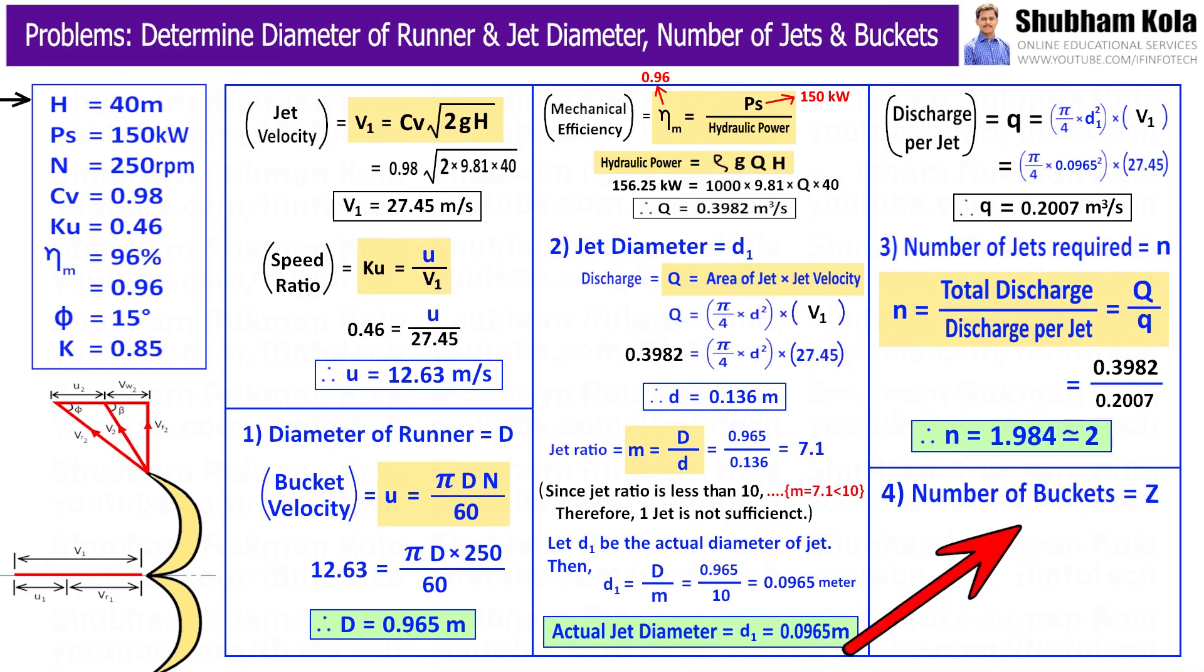At the last, we want to calculate number of buckets Z, and it is given by formula Z = 15 + 0.5m, where jet ratio m is 10. This will give the number of buckets Z equal to 20 buckets.